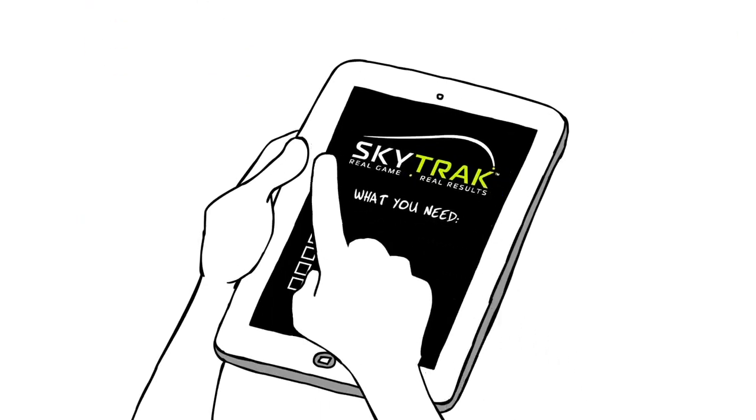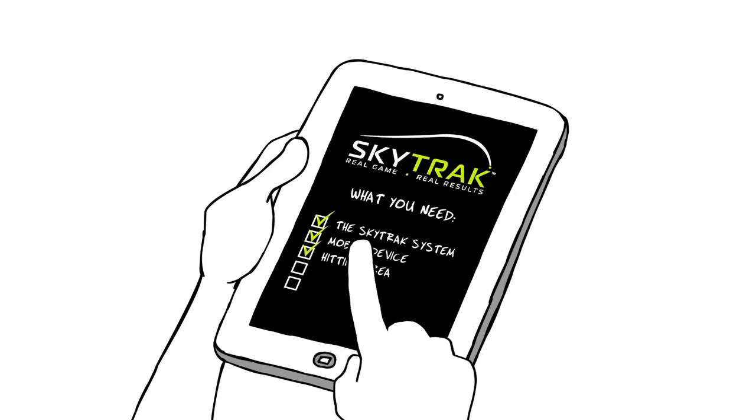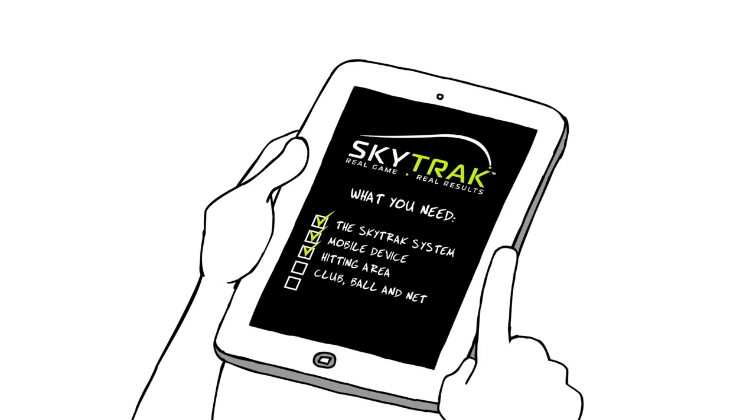Here's what you'll need to get started: the SkyTrack system, a mobile device, a safe hitting area, your club, a ball, and we recommend a net. And lastly, though not required, an internet connection will give you access to additional online features.